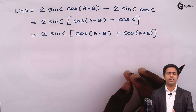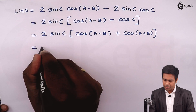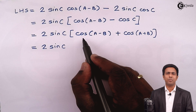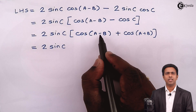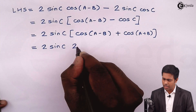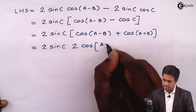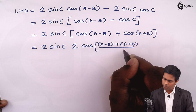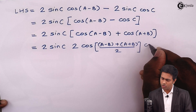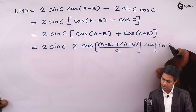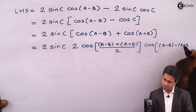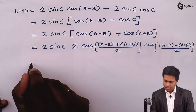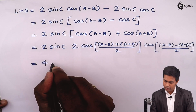This gives us an expression in terms of A and B only. This will be 2sinC times [cos(A minus B) plus cos(A plus B)]. Now applying the factorization formula for cosC plus cosD, this equals 2sinC times 2cos of (A minus B plus A plus B)/2 into cos of (A minus B minus A minus B)/2. Multiplying 2 by 2 gives 4sinC.